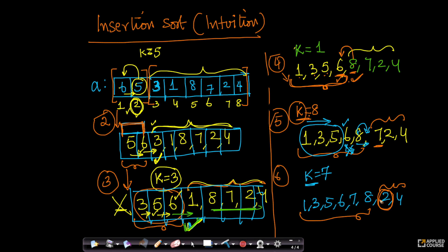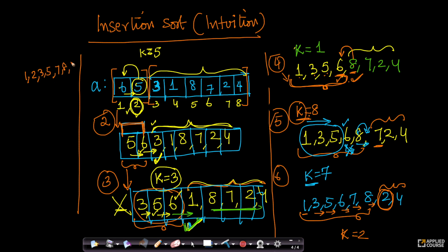Now I will take K equals 2. I compare K with 8 — K is less than 8. K is less than 7. So 8 gets pushed, 7 gets pushed, 6 gets pushed, 5 gets pushed, 3 gets pushed. It stops at 1. So I get 1, 2, 3, 5, 6, 7, 8, and 4 is still unsorted. Now again K becomes 4. I start comparing: 8 is greater so it moves right, 7 is greater so it moves right, 5 is greater so it moves right. 3 is less than or equal, so it stops. The result is 1, 2, 3, 4, 5, 6, 7, 8.